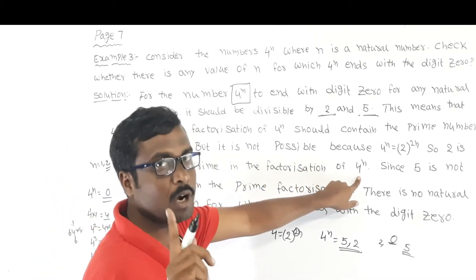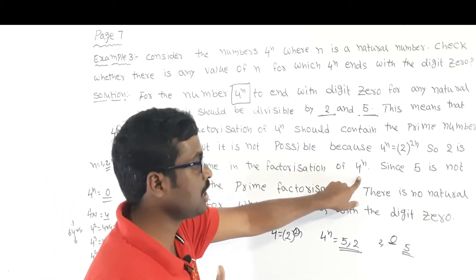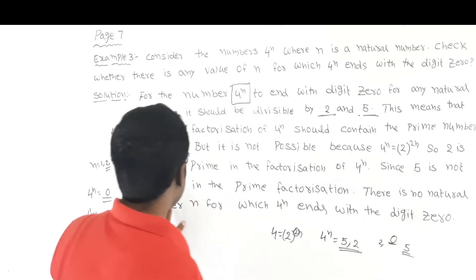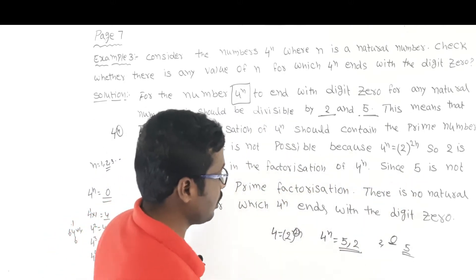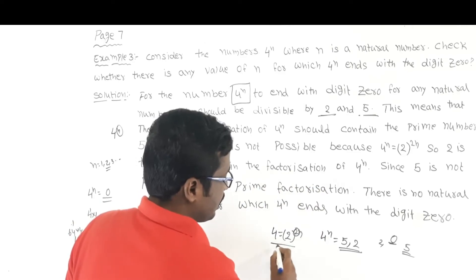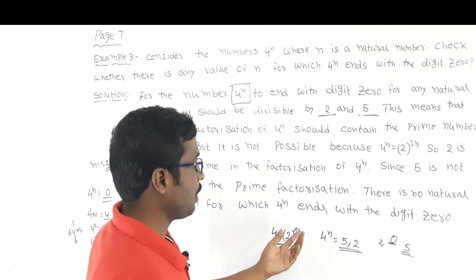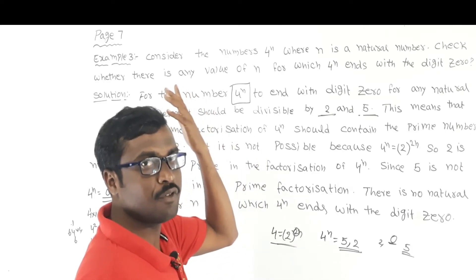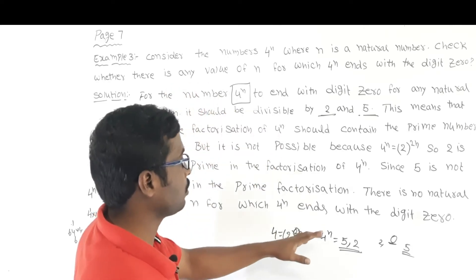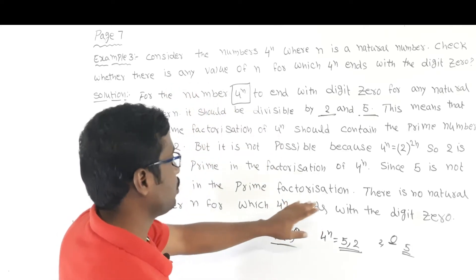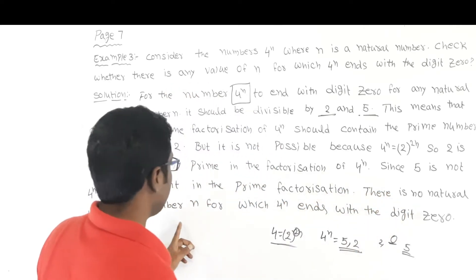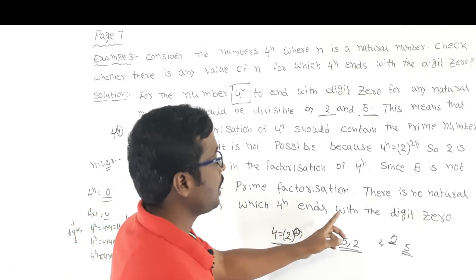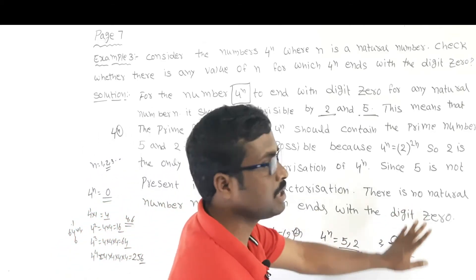Since 5 is not present in the prime factorization of 4 to the power of n — which equals 2 to the power of 2n — there is no natural number n for which 4 to the power of n ends with the digit 0.